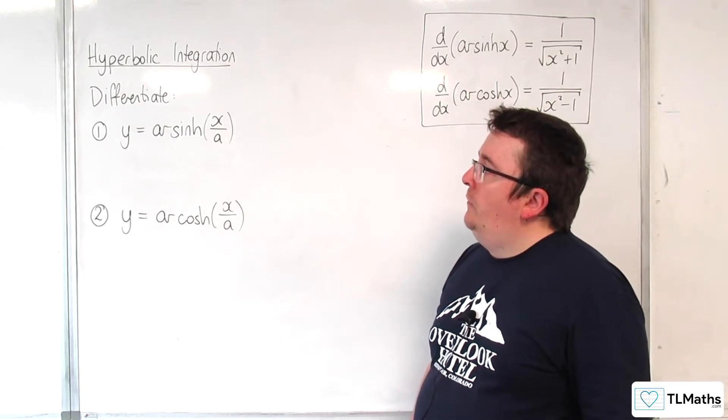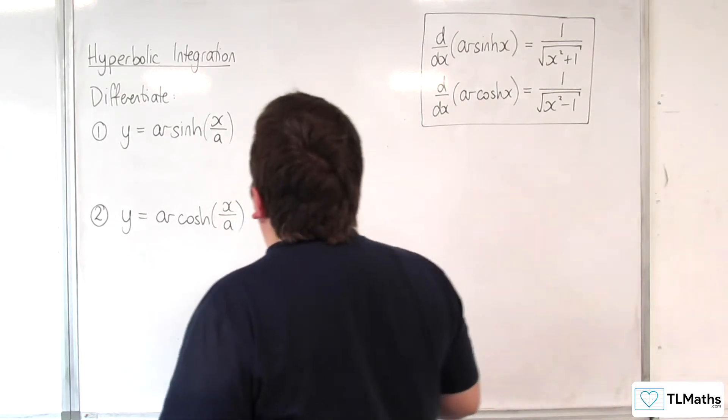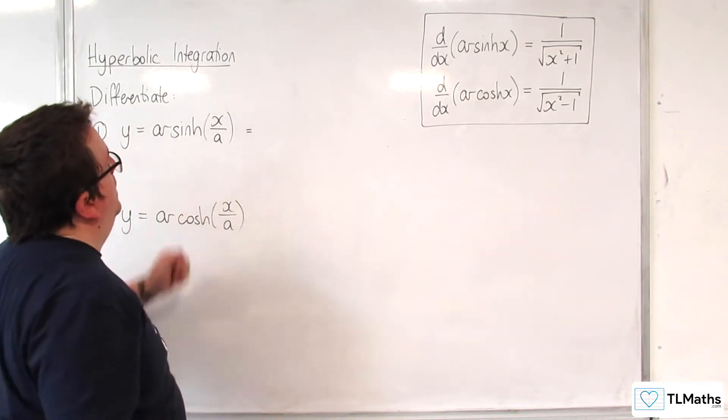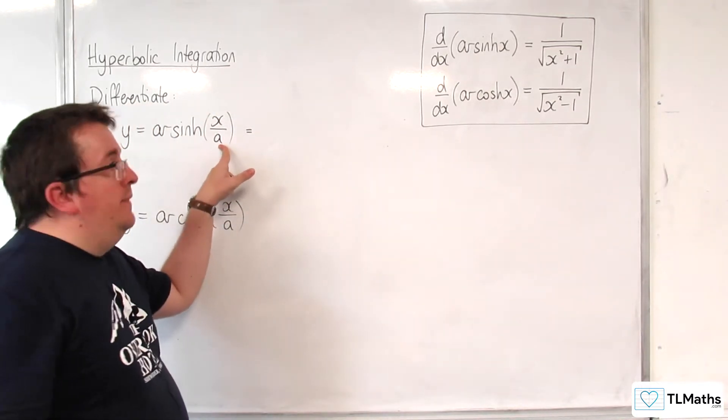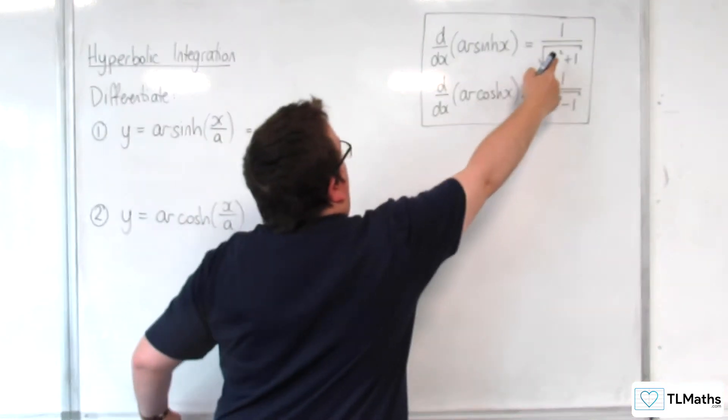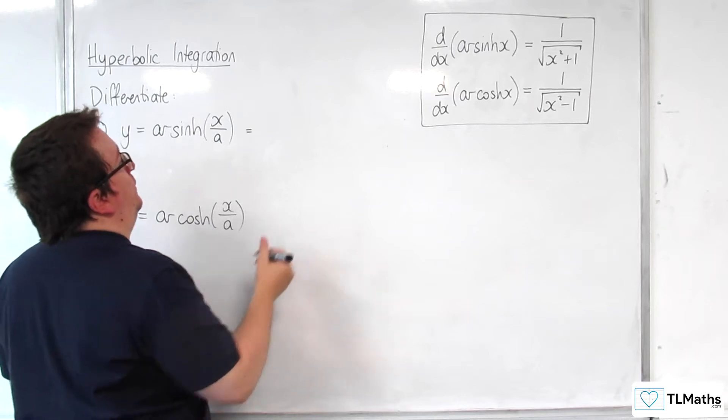So arcsinh of x over a. Now I'm going to use that result. So using the chain rule, the derivative of the inside is 1 over a. That's going to come outside, and so that's going to multiply with this, where the x is replaced with x over a.